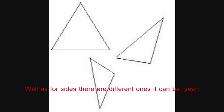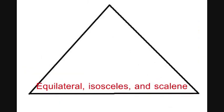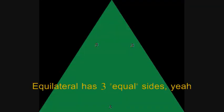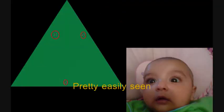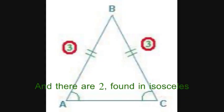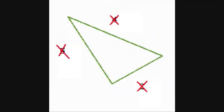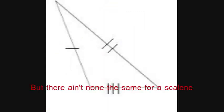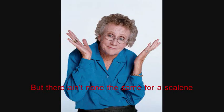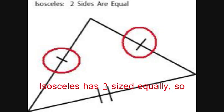Well, last four sides — there's different ones it can be. So watch real close now: equilateral, isosceles, and scalene. There's only three. Equilateral has three equal sides, pretty easily seen. Isosceles has two equal sides. And scalene has none the same — no sides are equal for scalene.